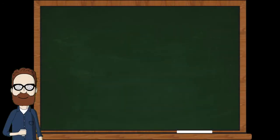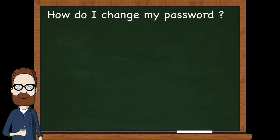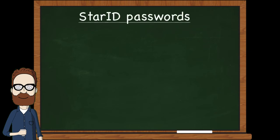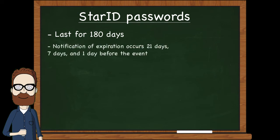Now that you have an active Star ID, let's address another common question: how do I change my password? Star ID passwords last for 180 days. The Star ID system will start sending notifications to your preferred email address twenty-one days, seven days, and one day before your password expires.